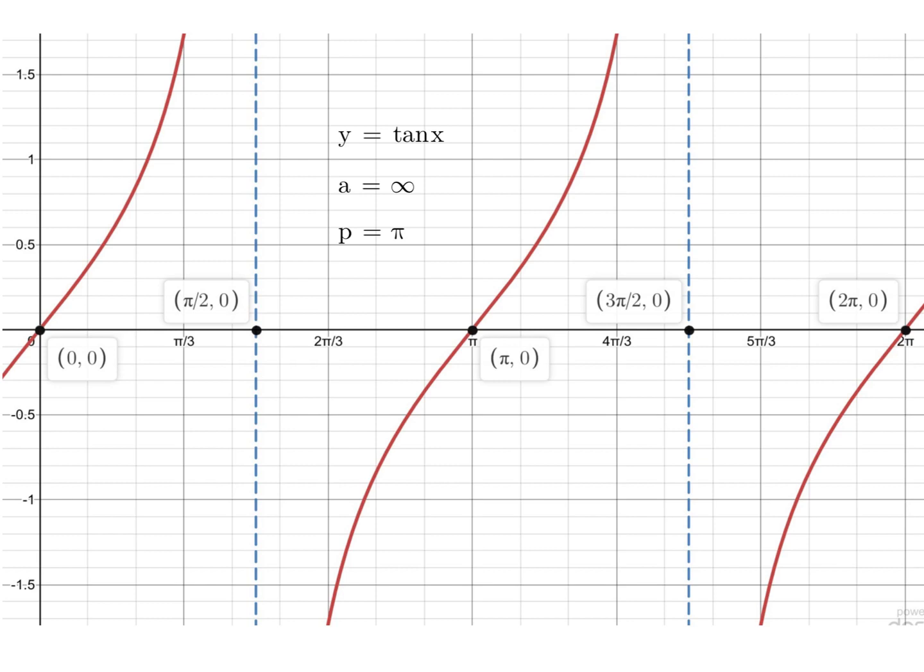So that's where we'll end for our amplitudes and periods, because the reciprocal graphs do have our periods, they're the same as their normal graphs, but we don't really refer to amplitudes for these ones.